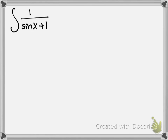This one uses a trig identity as well. Note that it was written without a dx originally — apologies for that. We can't integrate the numerator separately because there's a plus or minus in the denominator. So I'm going to use algebraic manipulation — specifically, I'll multiply top and bottom by the conjugate, sine of x minus 1.